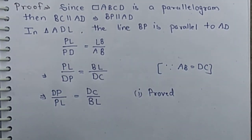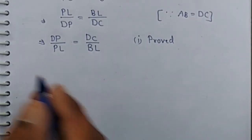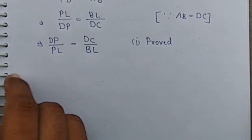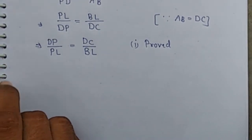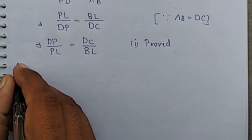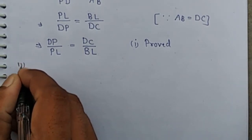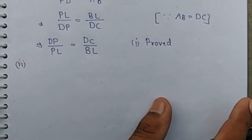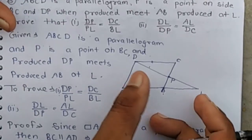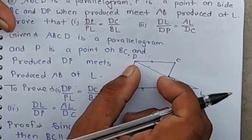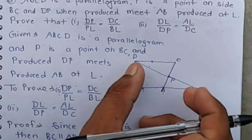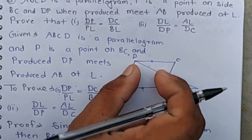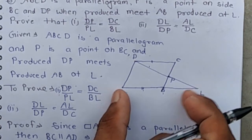Now for the second part, we have to show that DL by DP is equal to AL by DC. By the corollary of Thales theorem, in triangle ADL since BP is parallel to AD, DL by DP is equal to AL by AB.